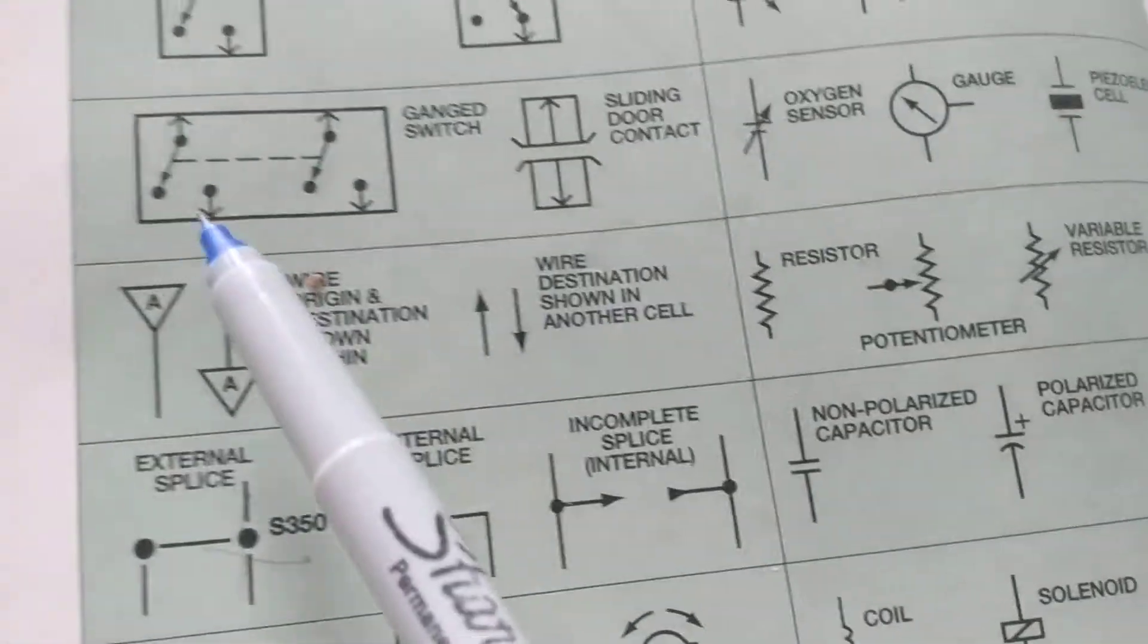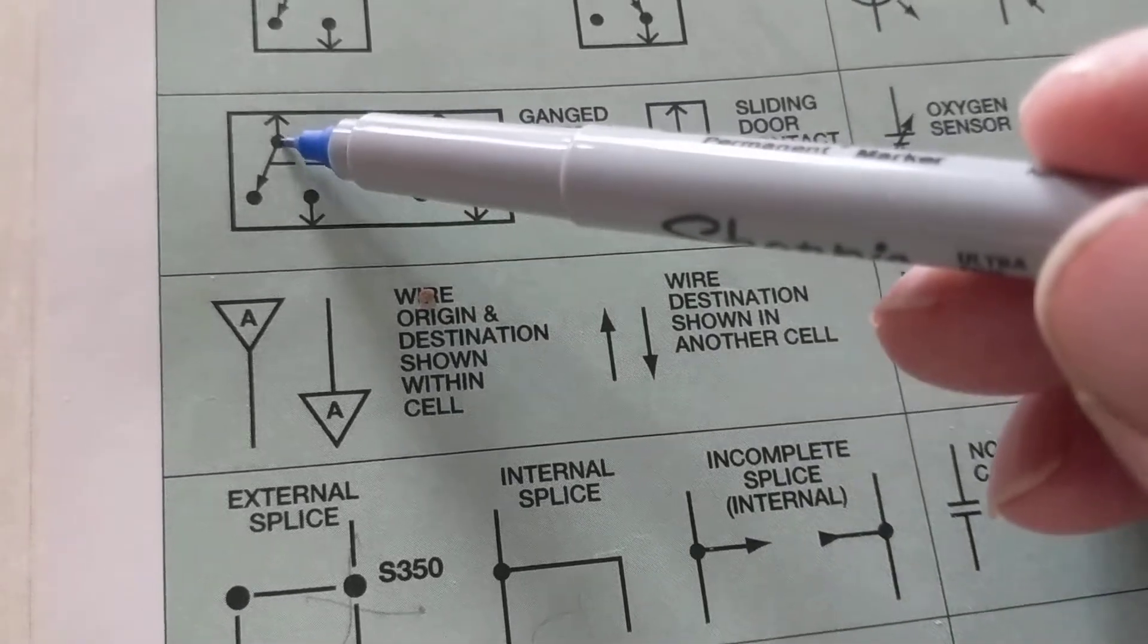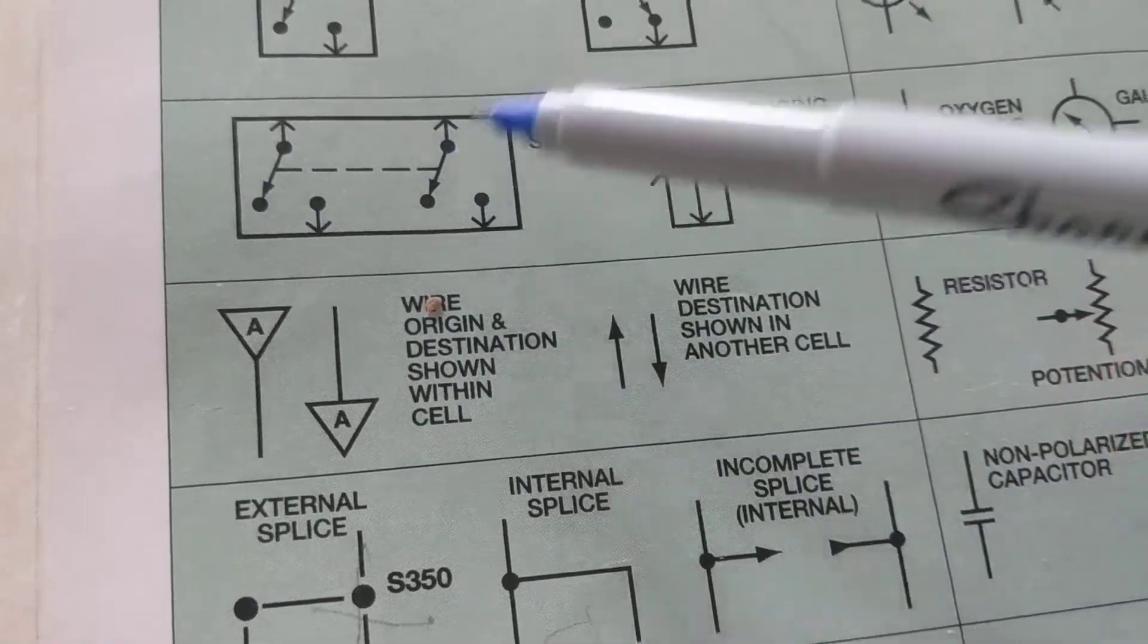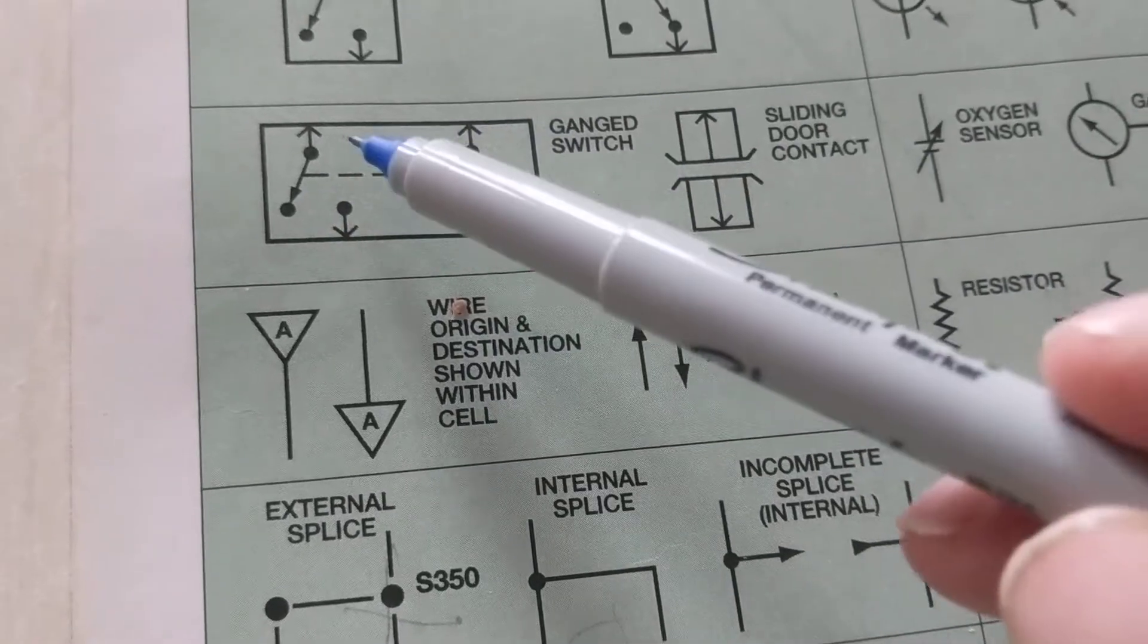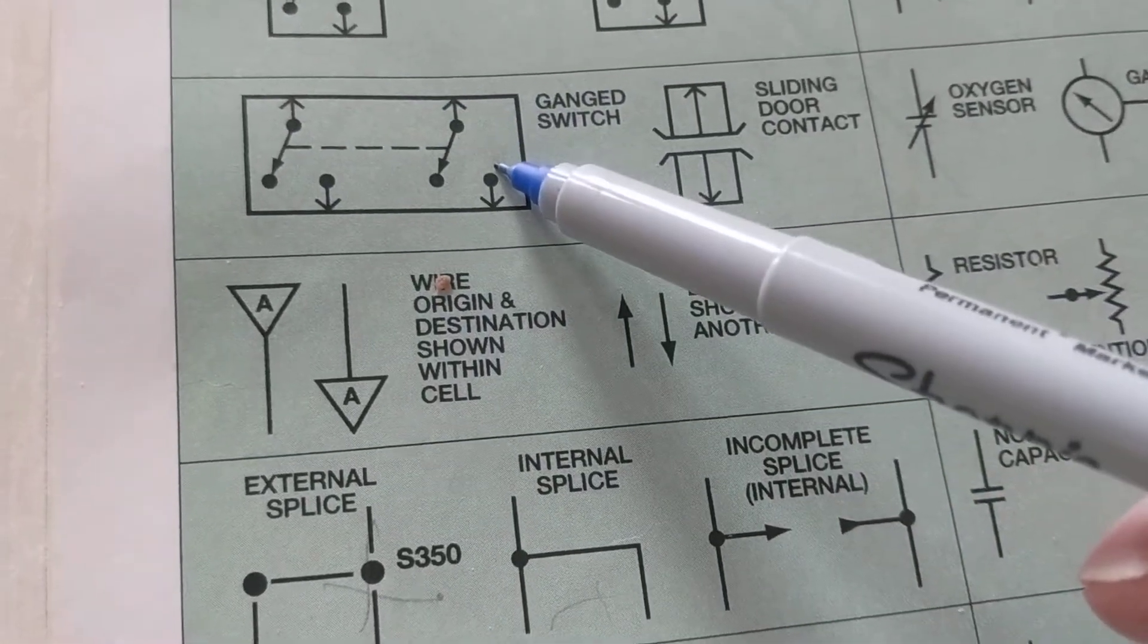This is the one we're going to concentrate on. These two are ganged together, meaning when this goes in this position, this is the same in this position. I call these the Siamese twins. They move simultaneously.